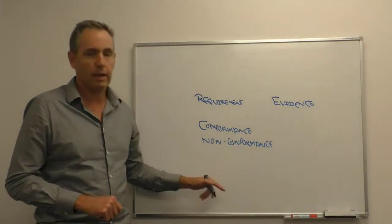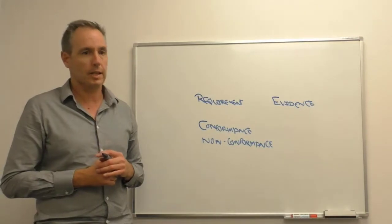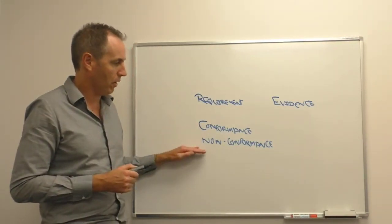Similarly, observation is just a finding category where we're just noting that we observed something on the day of the audit. So look at your finding categories, how they're defined.